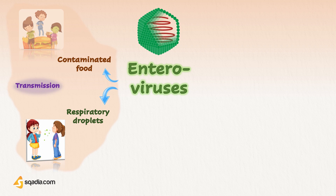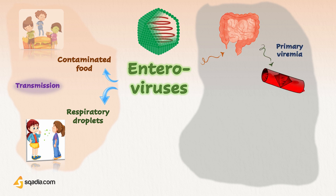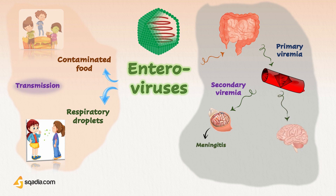Enteroviruses are usually acquired via the intestinal tract, causing subsequent viremia — that is, the presence of virus in the bloodstream. This may then lead to secondary viremia, which is the invasion of microbes to other target organs — for example, the meninges causing meningitis, the brain causing encephalitis, or the myocardium causing myocarditis.